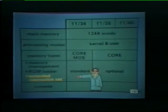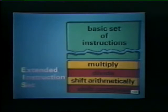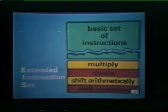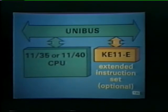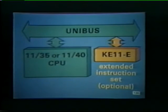The extended instruction set, or EIS, provides hardware facilities for executing multiply and divide instructions, as well as arithmetic shifts. These EIS instructions are directly compatible with instructions used in the larger PDP-11 computers. In 1134 systems, the EIS hardware is an integral part of the central processor — the hardware is built right into the CPU. In 1135 and 1140 systems, the extended instruction set consists of a separate printed circuit module called the KE11E. This optional module is connected to the Unibus and therefore operates like a peripheral device.